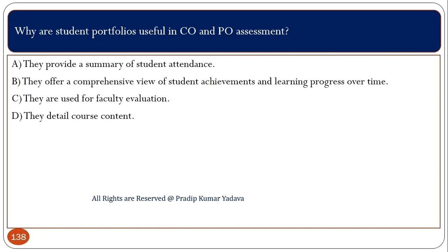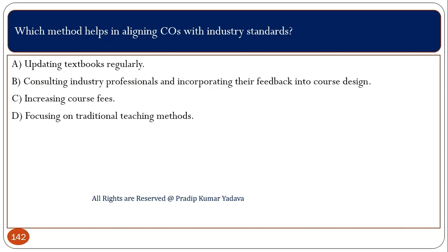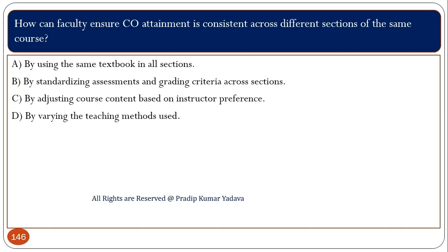Why are student portfolios useful in CO and PO assessment? They offer a comprehensive view of student achievements and learning progress over time. What is the role of continuous improvement in CO and PO assessment? To ensure that educational objectives and outcomes are regularly refined and enhanced based on assessment data. Which method helps in aligning COs with industry standards? Consulting industry professionals and incorporating their feedback into course design. What is the key feature of effective PO assessment? It involves both direct and indirect methods. How can faculty ensure CO attainment is consistent across different sections of the same course? By standardizing assessment and grading criteria across sections.